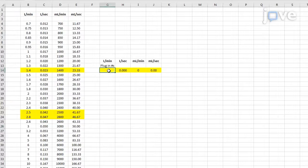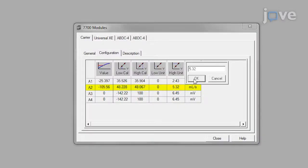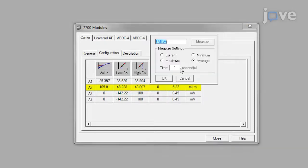Next, convert the inflow value measured from the flow meter from liters per minute into milliliters per second and click the high unit cell to enter the value in milliliters per second. Double-click High Cal, change the time to 3 seconds and click Measure.